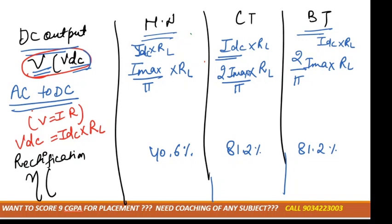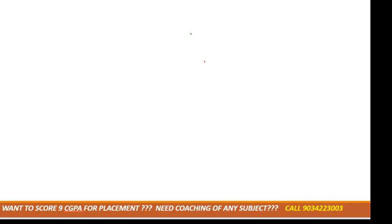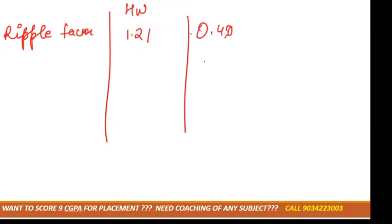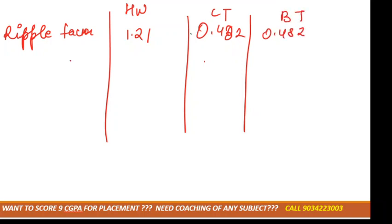Next is the ripple factor, which has fixed values for all rectifiers. The ripple factor is 1.21 for the half wave rectifier. And it is 0.482 for the center tapped rectifier. Again it is 0.482 for the bridge type rectifier.